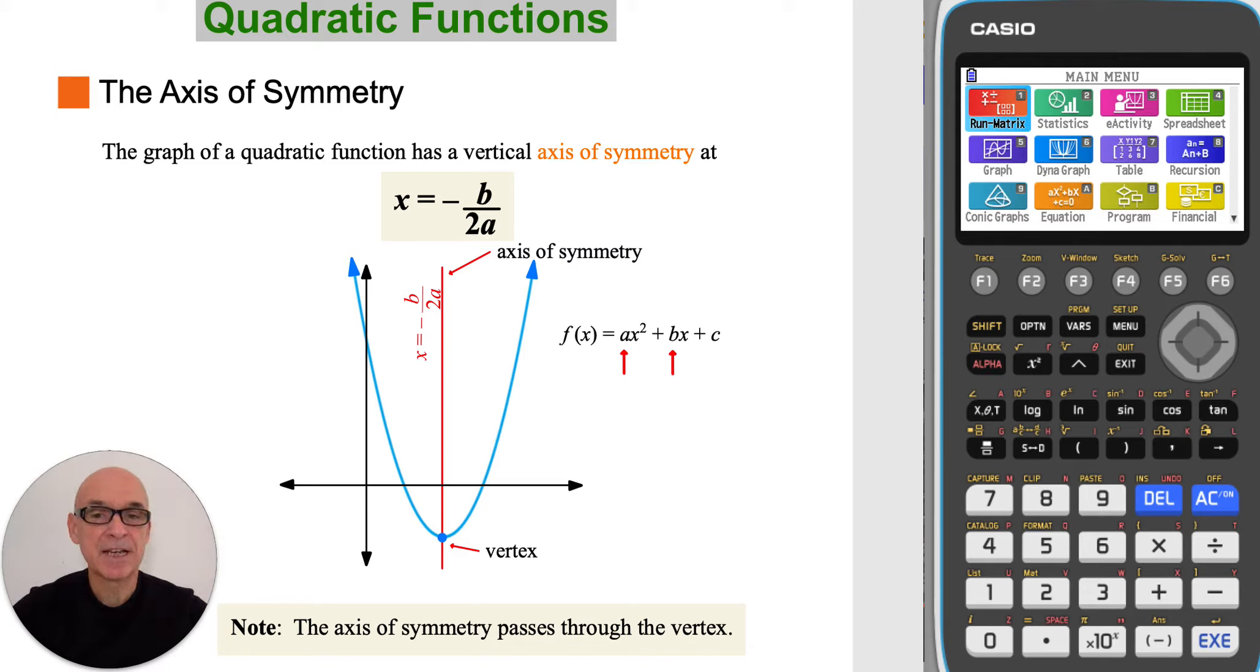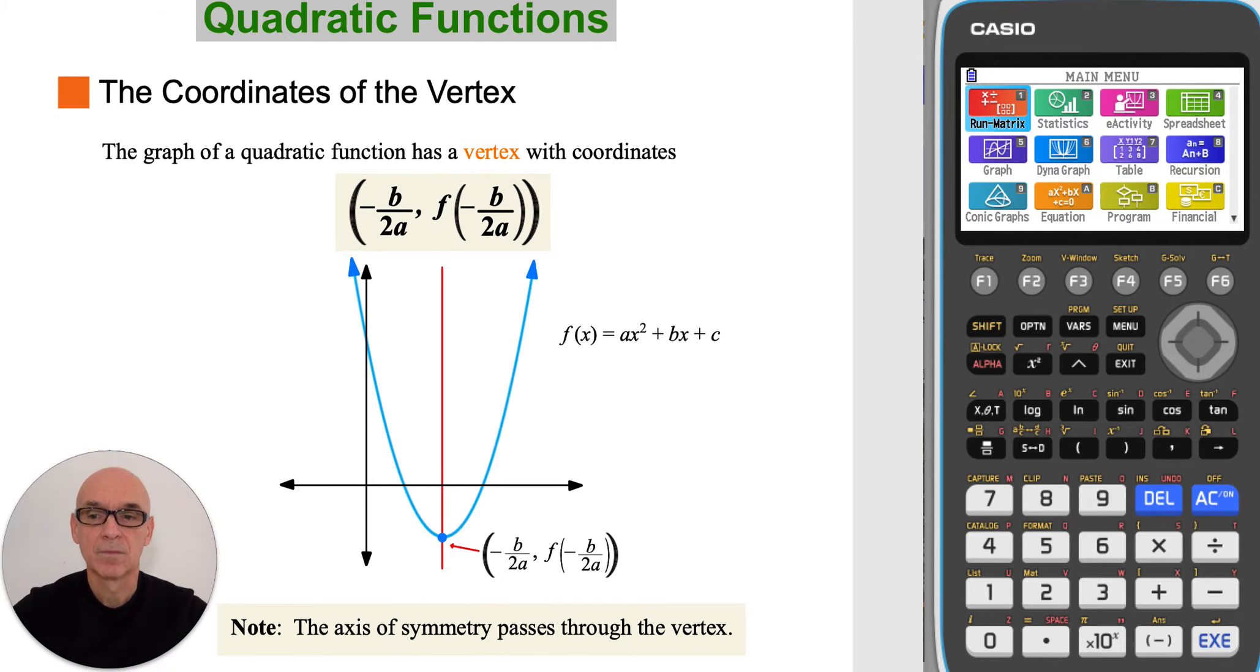And as already stated, this equation is given in your formula booklet. The axis of symmetry will also pass through the vertex. And the coordinates of the vertex are negative b over 2a comma f of negative b over 2a.